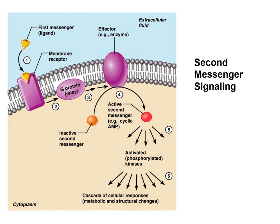Here's our second message signaling again. I want to clarify - I did have a question in class - this second message isn't just one copy; it may be thousands and thousands of copies or particles that are modulators of proteins, and that's why you can have this amplification effect. You can have a bunch of cofactors that activate a bunch of proteins that then cause all kinds of metabolic or genetic responses. That's the essence of a second message: it's the biochemical message inside the cell in response to a first message from outside the cell.